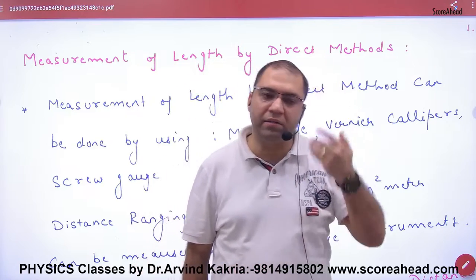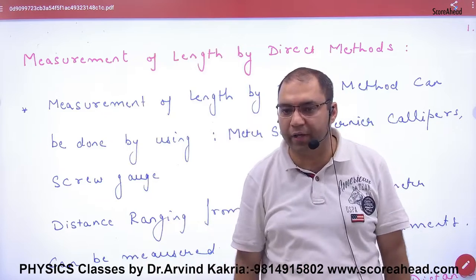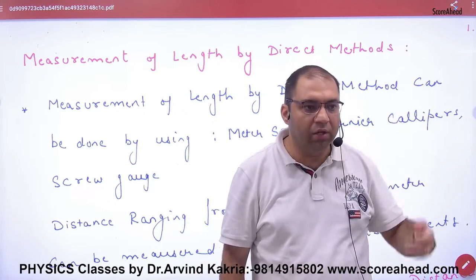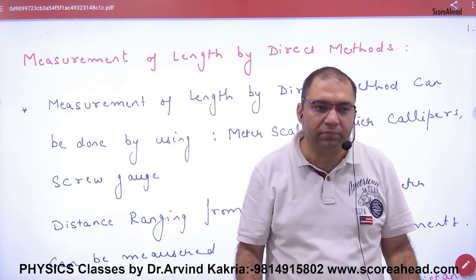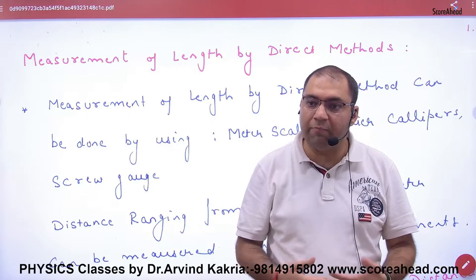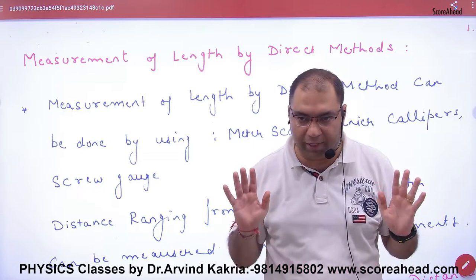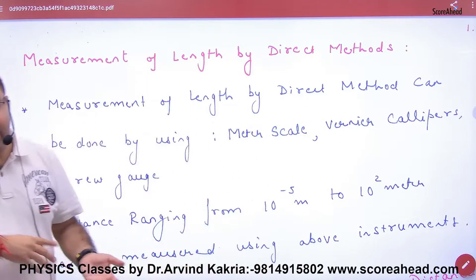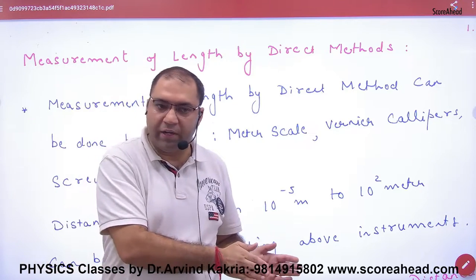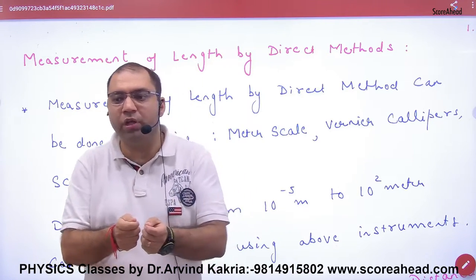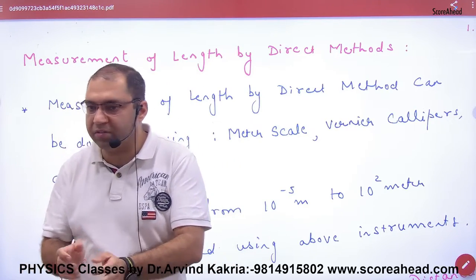Similarly, suppose you want to measure the distance to the moon or a star like Alpha Centauri — you cannot put a meter scale there. There is no direct method for such large distances. However, we have indirect methods by which we can calculate those distances. This chapter tells us that we have some direct methods for measuring distances, and where direct methods fail, indirect methods are used.